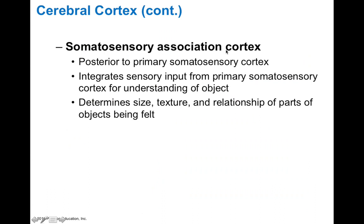The somatosensory association cortex is located just posterior to the somatosensory cortex. It integrates sensory input from multiple modalities and helps determine size, texture, and relationship of parts. For example, if your eyes are closed and you're feeling for your phone in the dark, you can detect a flat surface, a rubber surface, and buttons on the side. It's the somatosensory association cortex that takes all those independent pieces of information and puts them together so you understand you're feeling a phone.